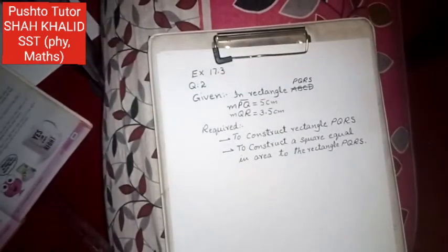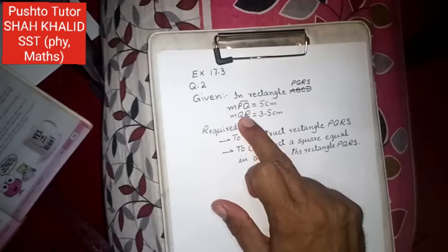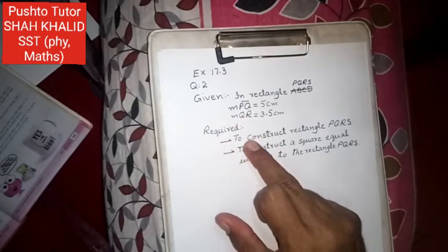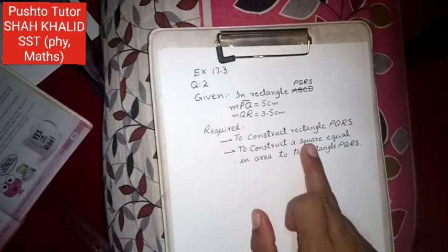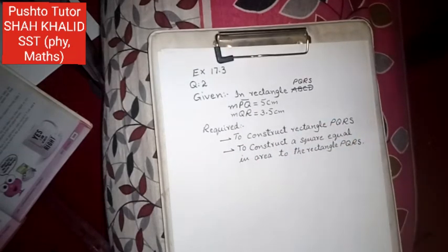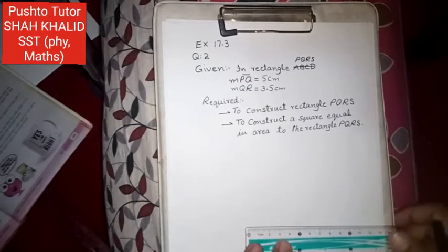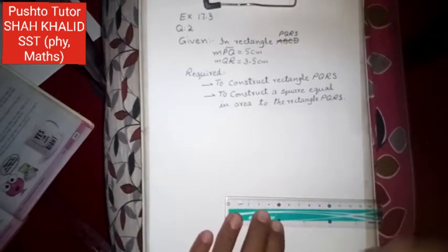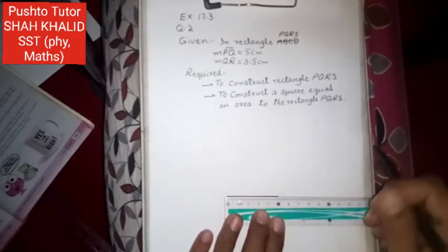The given data is for the rectangle. We need to construct a rectangle PQRS, and then we must construct a square whose area is equal to the given rectangle's area. Now let's construct the rectangle according to the given data. The PQ side is 5 cm. So draw one line segment or side equal to 5 cm.